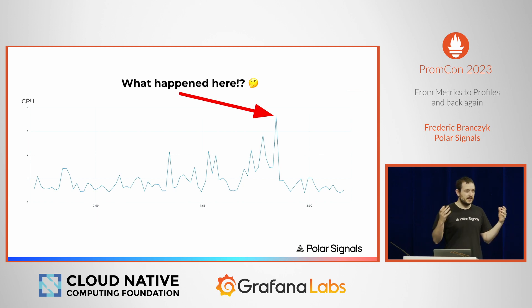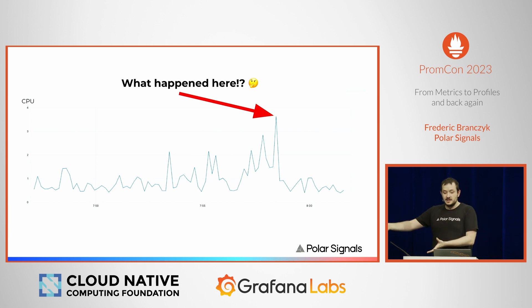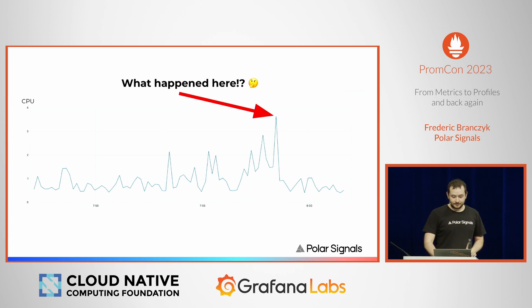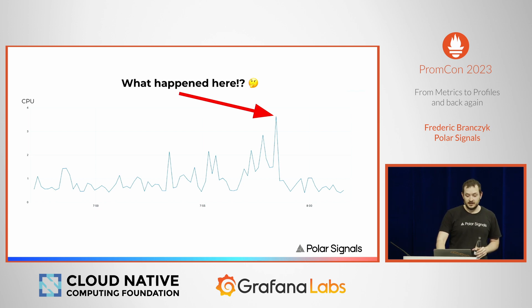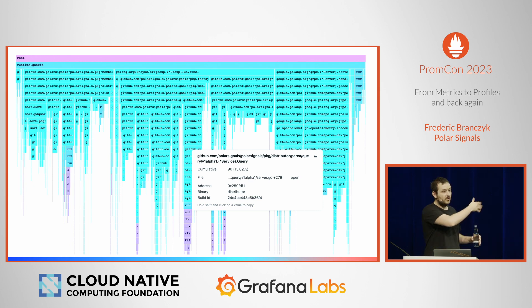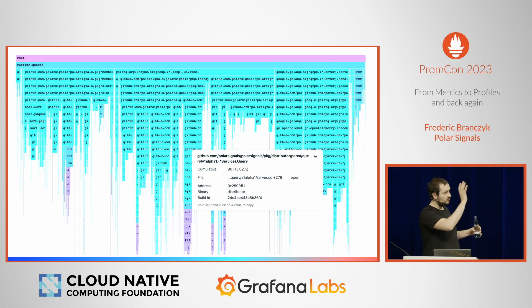Profiling is a tool that has basically existed ever since software engineering has existed, because we always needed to understand down to the line number where our resources are spent. Most of the time we're going to be talking about CPU profiling, but theoretically profiling can be done with any kind of resource spent by our processes. In this particular case, what I would want is a CPU profile from exactly that spike. I was the pathological user doing a very expensive query just so I could produce this data, and now I can actually dive in and figure out that yes, this was the query.